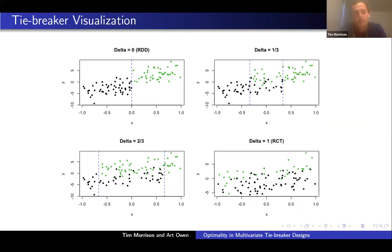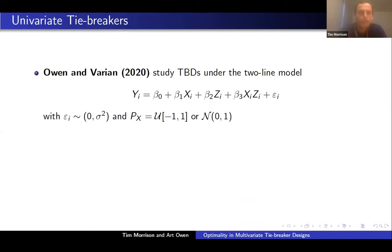Here we have a visualization. These data are all generated from the same generative model. The green dots are treated and the black dots are untreated. In the top left is an RDD where everyone above some cutoff is treated; the bottom right is an RCT where everyone is just 50-50. As you increase delta, you increase the window in which there is this 50-50 randomization. In 2020, Owen and Varian studied these tiebreaker designs under the univariate two-line model, where y sub i is a linear function of covariates where the treated group has its own slope and intercept and the control group has its own slope and intercept, with homoscedastic noise terms. They looked at uniform and standard normal distributions for p sub x.